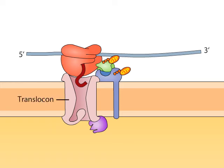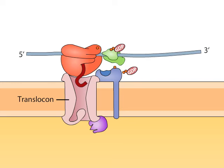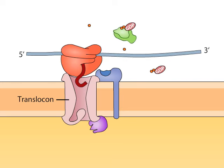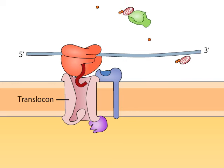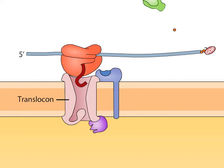Hydrolysis of GTP to GDP leads to the dissociation of SRP from both the receptor and the ribosome mRNA complex.